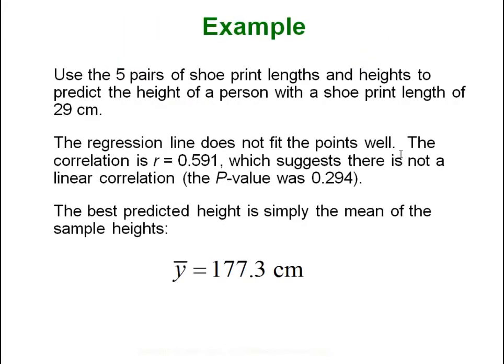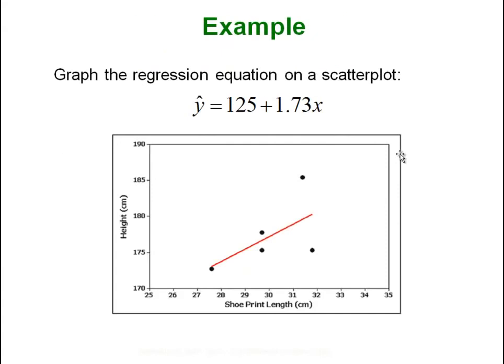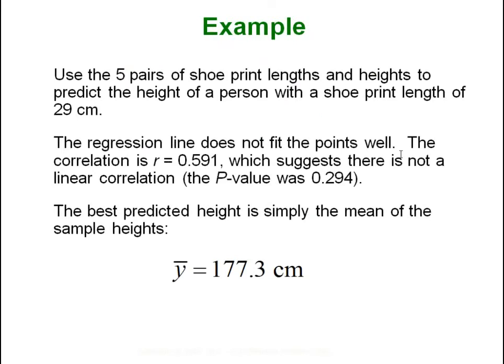Back to our example: if we wanted to predict the height of a person with a shoe length of 29, that value is within our range so we are not extrapolating. However, the line did not fit the dots very well — our r was pretty weak and our p-value was pretty large, telling us there really is not a linear relationship. So instead of using the equation, the best thing we can do is use the average y value, which was 177.3 centimeters — the average of those five heights.